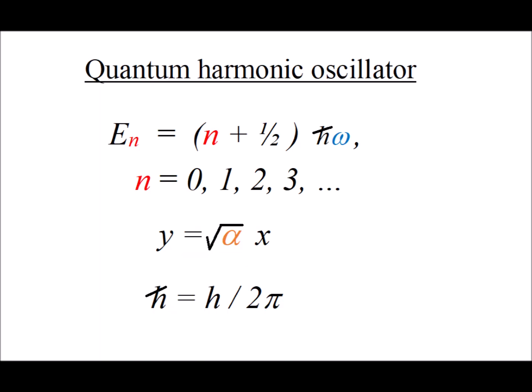Hello. In this video, we are going to do two things. First, we are going to derive an expression for the classical turning points of a classical harmonic oscillator that has the same energy as a quantum harmonic oscillator. This will be the classical limits on the displacement during a particular vibration. In the second part, we are going to derive the units of a quantity that is important in that expression for the classical turning points.